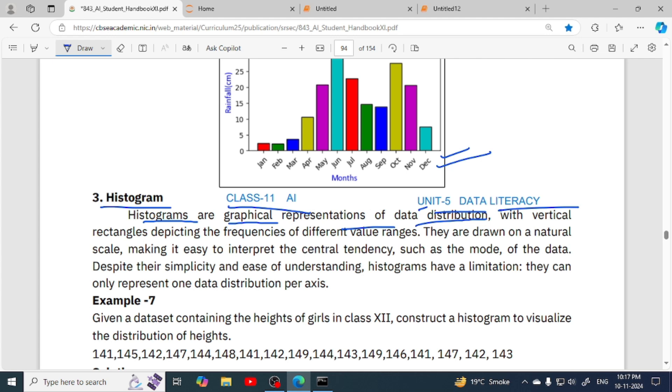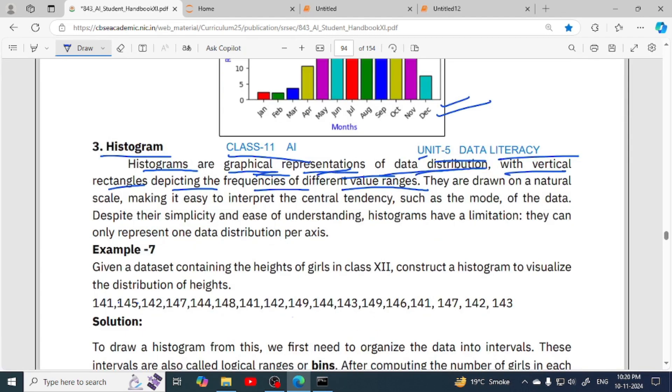Now, what are histograms? Histograms are graphical representations of data distribution with vertical rectangles depicting the frequency of different value ranges. We already know the meaning of graphical representation - it means in the form of pictures, pictorial representation. So histogram is a type of chart, which is a graphical representation of data.